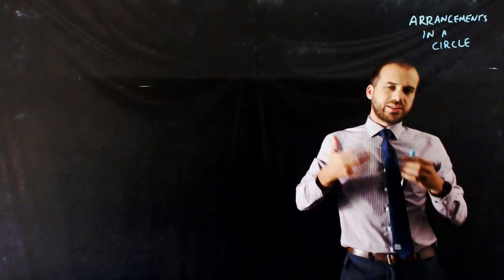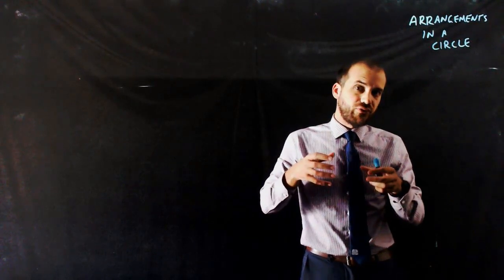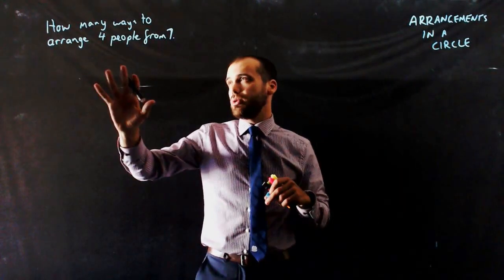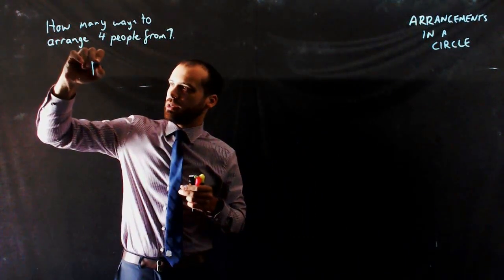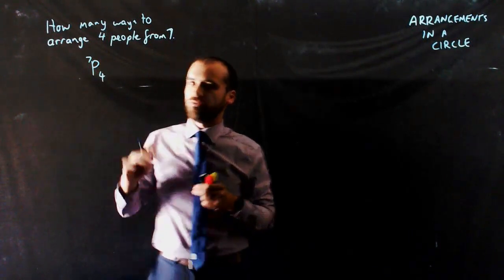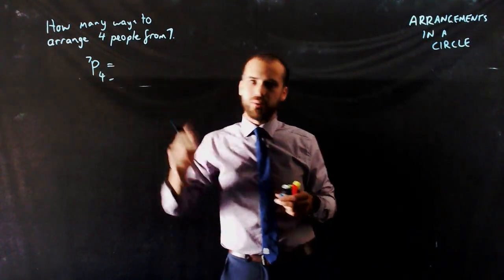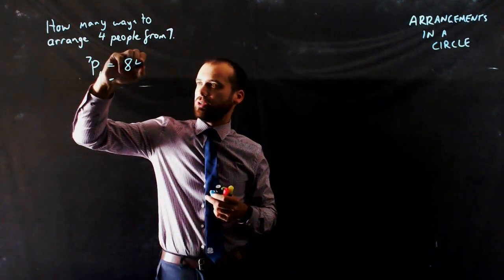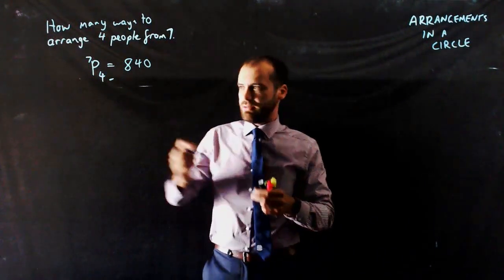Let's think about seven people first, and how many different ways we're going to arrange four of them. We should already know that if you want to arrange four people from seven people, it's going to be seven permute four. The answer to seven permute four is 840.